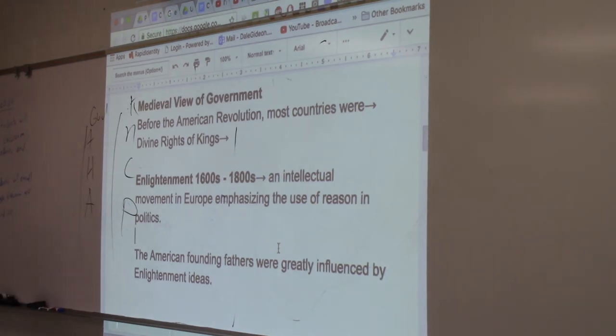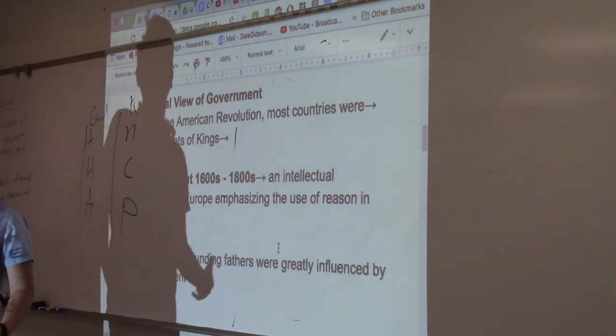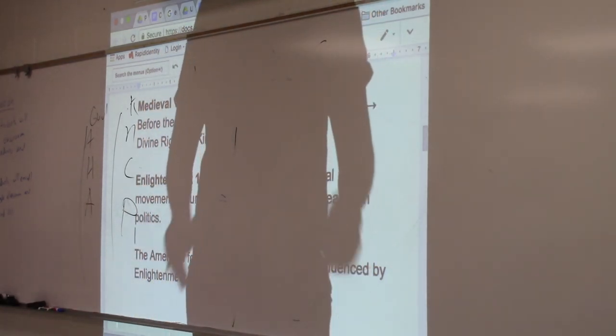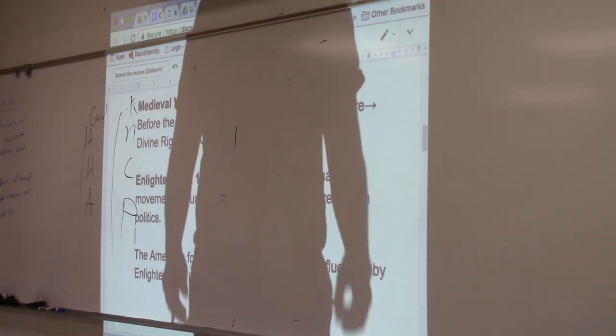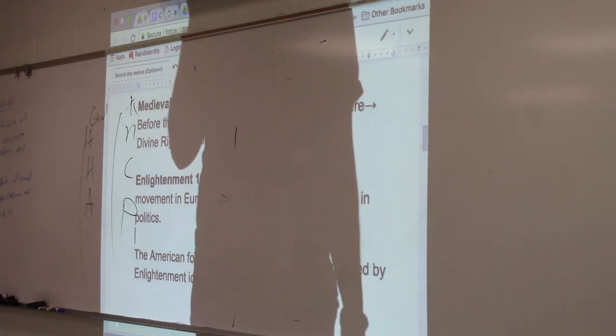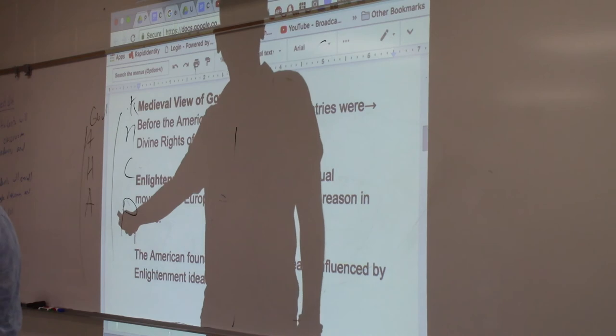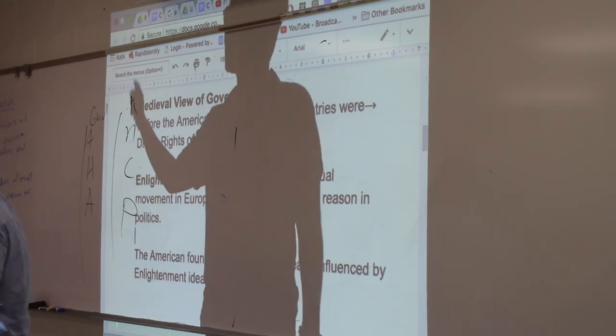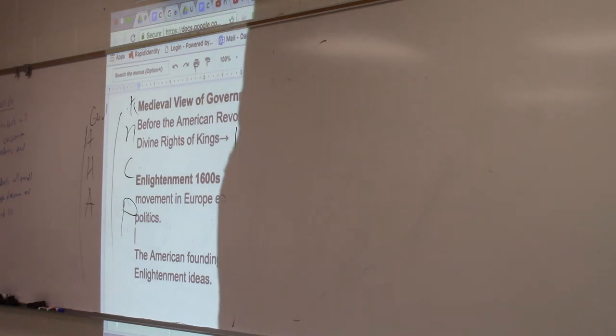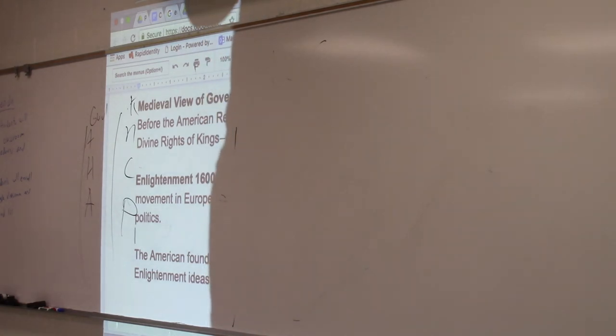For a lot of people this just made sense. People back then believed in something called the Divine Right of Kings — that when a king comes to power, God put him there. You were born a king because God wanted you to be; you were born a peasant because God wanted that. It was very difficult to overthrow a malevolent king, because going against your king meant going against God. The Enlightenment is going to change all of that.